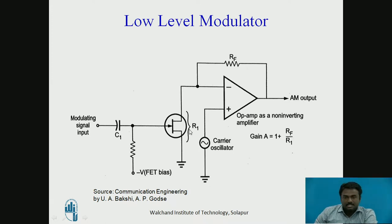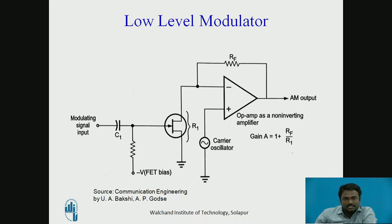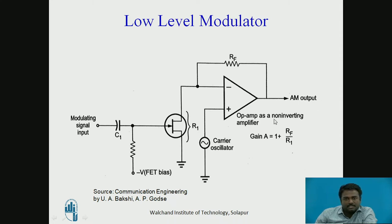To understand the working principle of this circuit, let us take two cases: in the absence of the modulating signal and in the presence of the modulating signal. During zero modulating input signal, the resistance of the field effect transistor remains constant, which in turn keeps the gain of the amplifier constant, which in turn keeps the amplitude of the AM output constant.